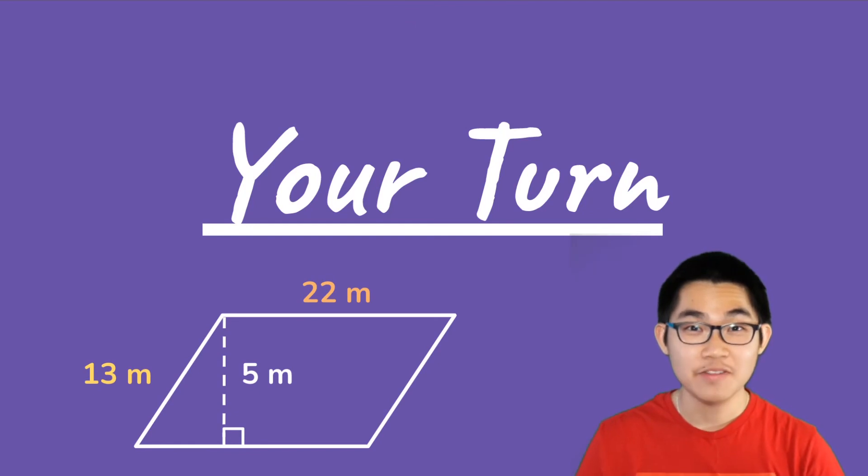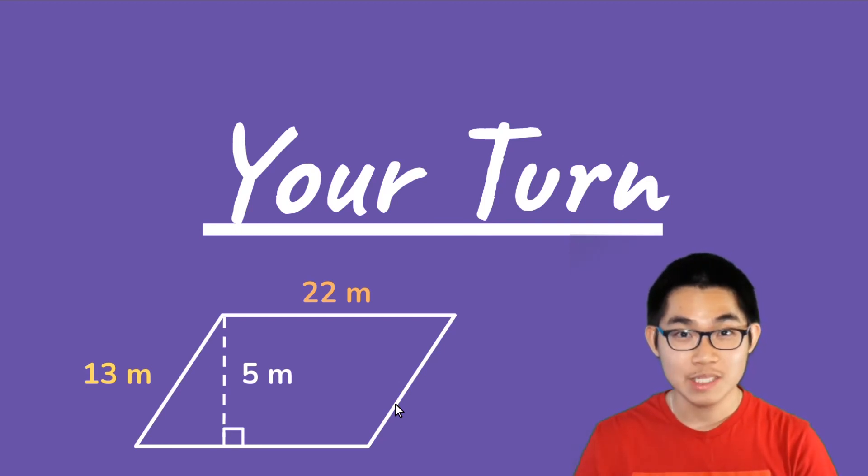And that is it for today. I hope you guys learned something new today. Now, it is your turn to try it yourself. So, go ahead and find the perimeter and the area of this trapezoid right here. And why did I say that this is a trapezoid? Well, it's because these two sides are parallel.